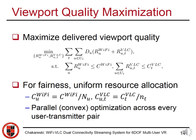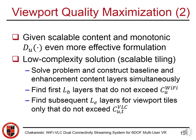Our aim is to maximize delivery viewport quality across all users such that the assigned data rates to all users across Wi-Fi do not exceed the capacity of the Wi-Fi link, and similarly the assigned data rates to every user served by an LED transmitter do not exceed the capacity of the VLC transmitter. Considering fairness, if Wi-Fi and VLC resources of an LED are uniformly shared across users, this leads to a parallel convex optimization across every user-transmitter pair. Given that the content is scalable and the objective function is monotonic, we provide a very low complexity formulation due to the use of scalable tiling.